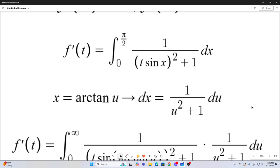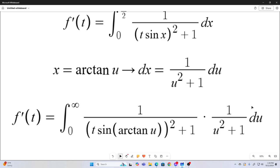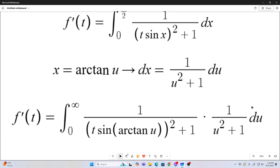So now our f prime of t becomes this. We literally just plug x, or arc tangent u, in for x. So now we have this.